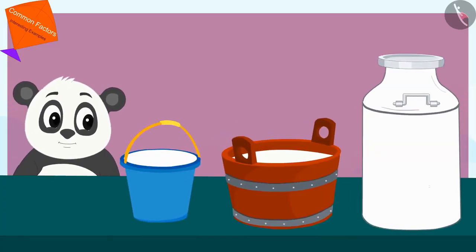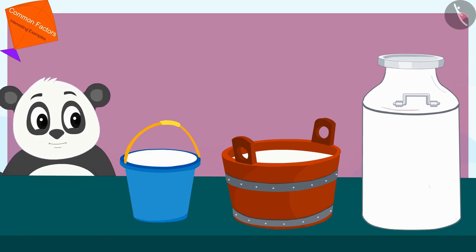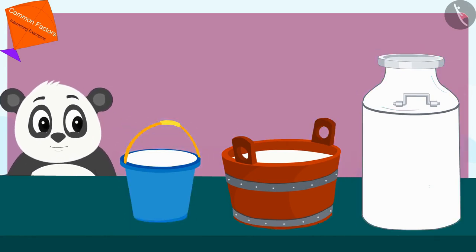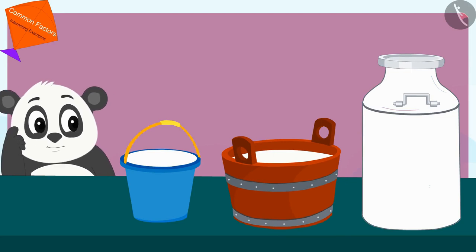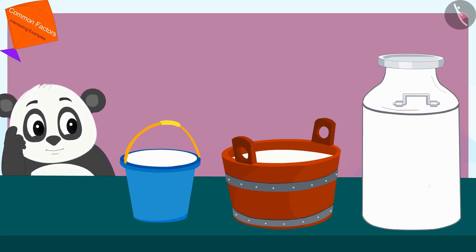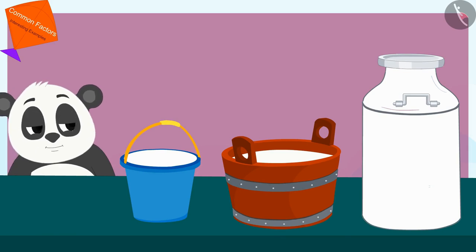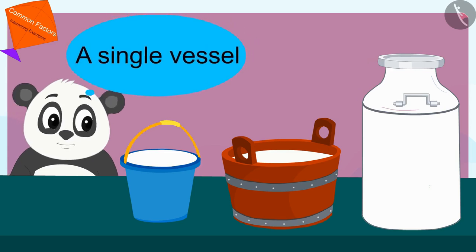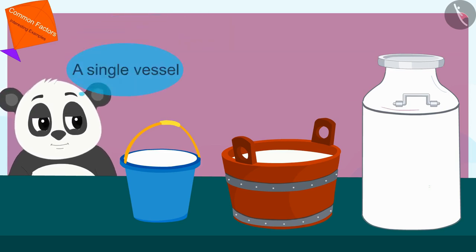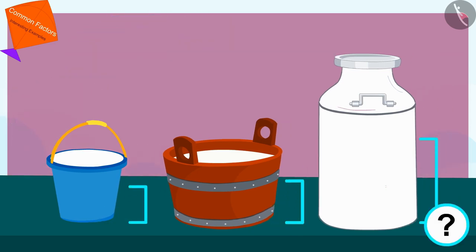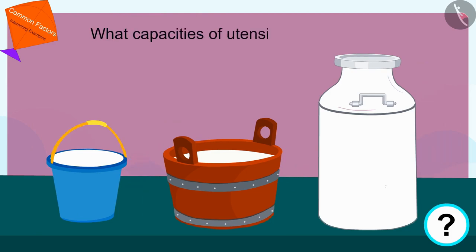Golu has 12, 18 and 24 liters of milk filled in different pots. But Golu doesn't remember which utensil has how many liters of milk. Golu is thinking that he will measure the milk of all those utensils using a single vessel. Children, can you tell us what capacities of utensils can Golu use?